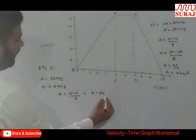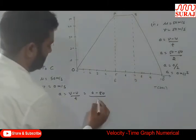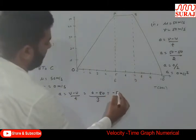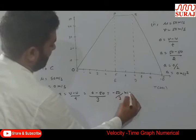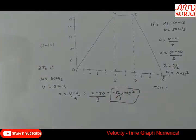So 0 minus 50 upon time, here is 3 seconds. So minus 50 by 3 meter per second square. This is the acceleration in the third case.